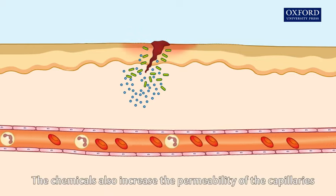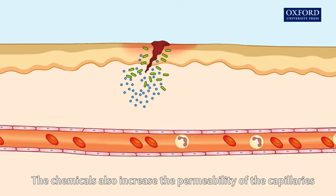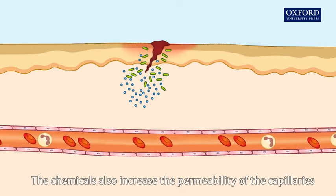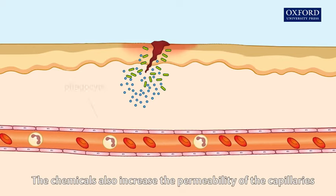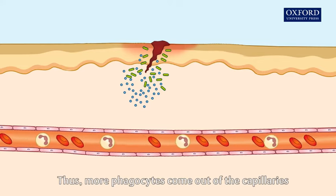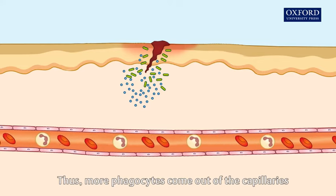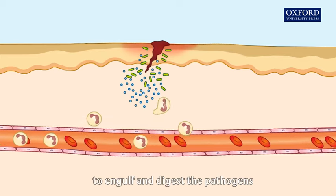The chemicals also increase the permeability of the capillaries. Thus, more phagocytes come out of the capillaries to engulf and digest the pathogens.